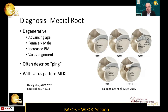In terms of diagnosis, medial and lateral root tears can be quite different. Medial tears are usually degenerative — they occur with advancing age, are more common in females, in the overweight, and with varus malalignment. Patients often describe a ping in the knee, which occurs with a relatively minor injury. These tears can also occur in a varus pattern of multiligament knee injury.